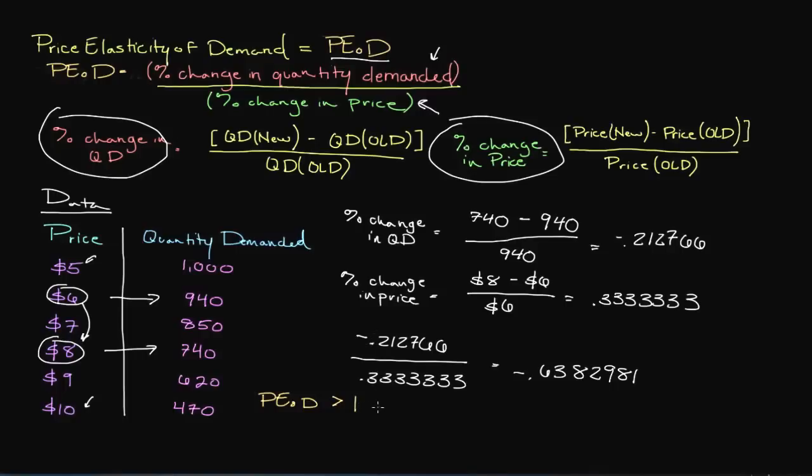let's say we have a price elasticity of demand that is greater than 1. If it's greater than 1, what that means is that demand is what we call in economics terms, price elastic. Which means that it's price sensitive.